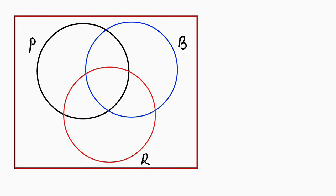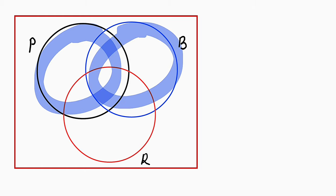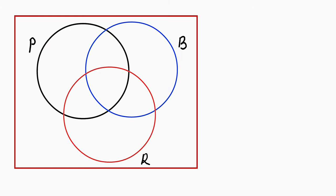I have already constructed my Venn diagram where we have three circles, because we are talking about three items. I have already declared the three items as P, B, and R, where P stands for pencils, B stands for books, and R stands for rulers.